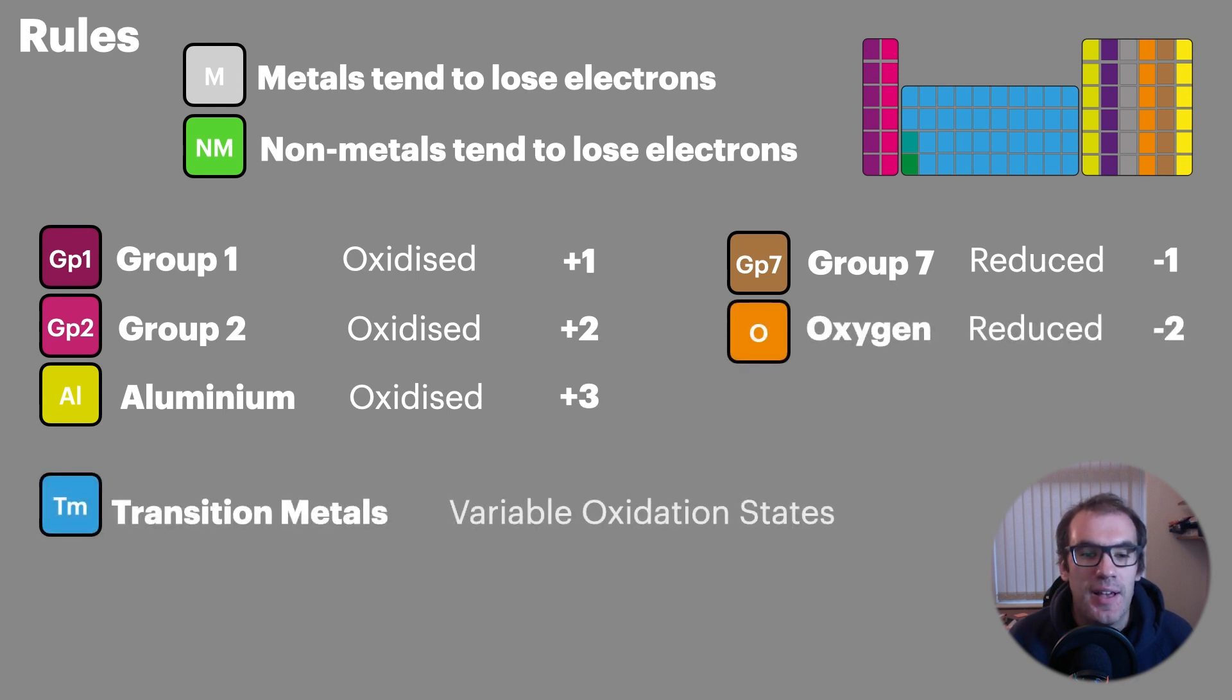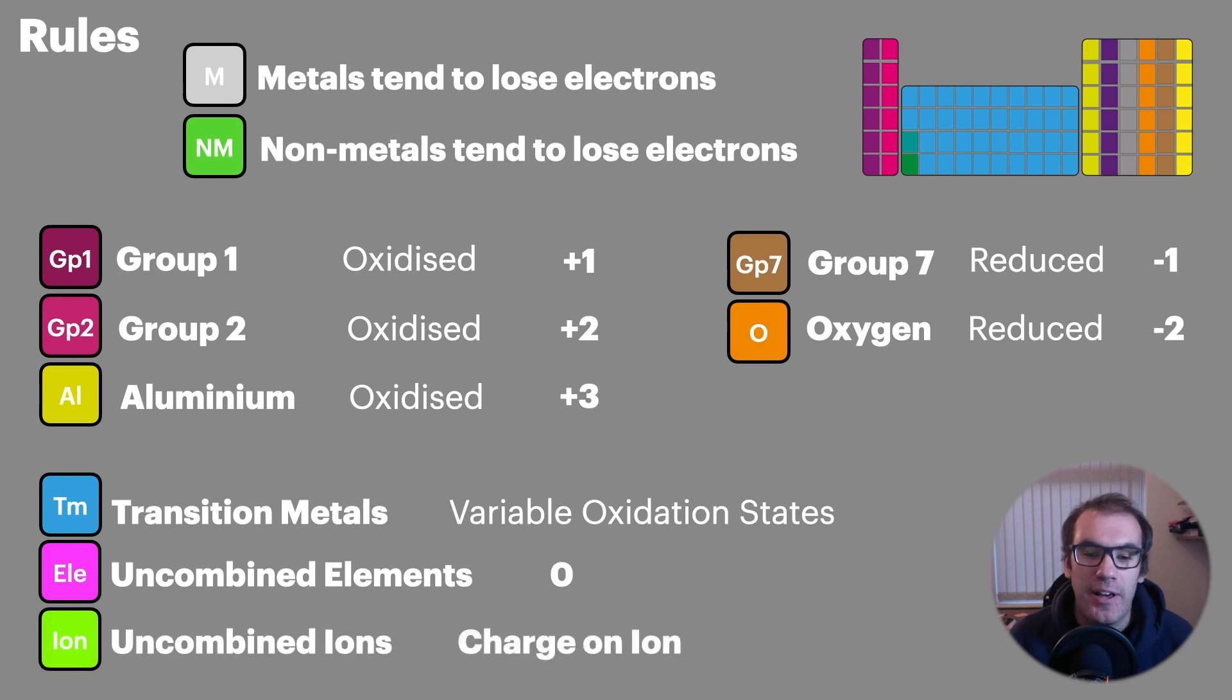We then have the transition metals. These can have variable oxidation states and we'll look at this in more detail in our transition metal topic in the second year. Any element which is uncombined has an oxidation state of zero and any uncombined ion will have the oxidation state equal to the charge on that ion.